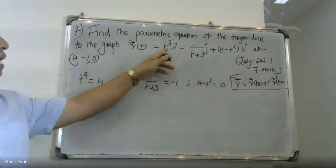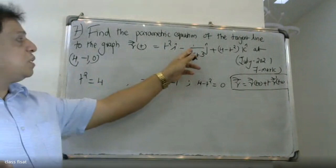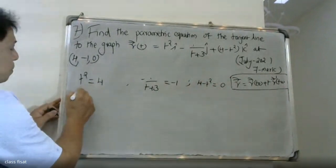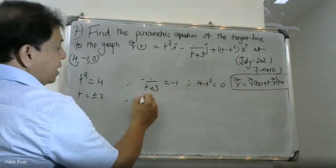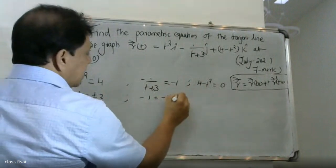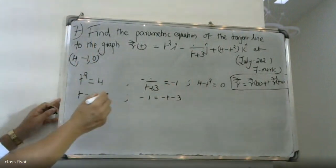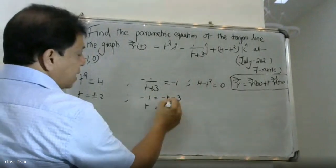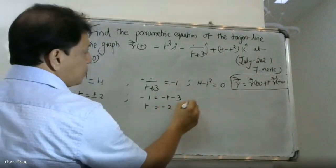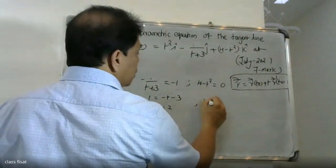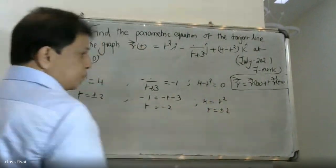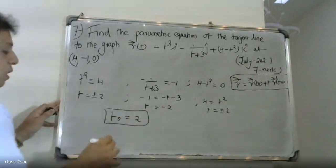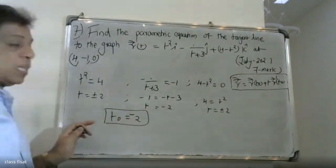We solve for t₀. Setting t² minus 1 divided by t plus 3 and cross-multiplying, we get minus one on the right-hand side minus three, which gives minus two. So the common point t₀ is minus two.